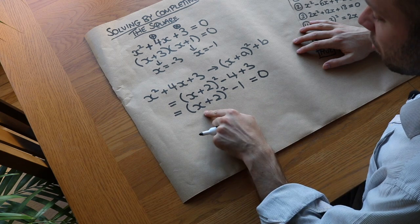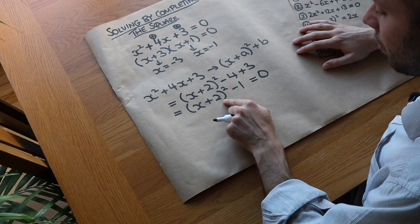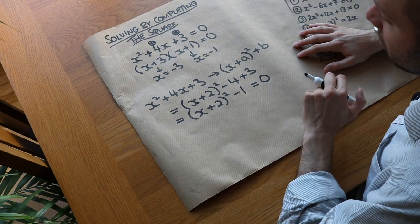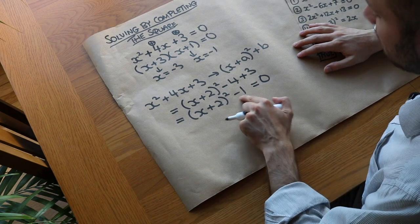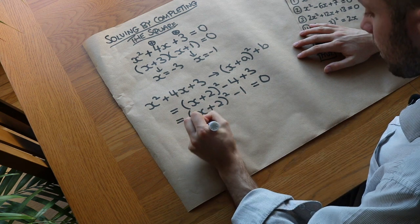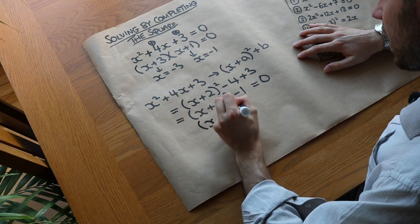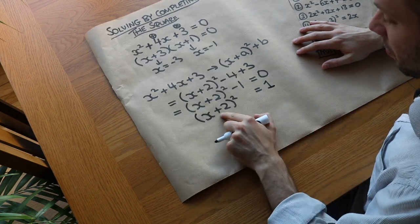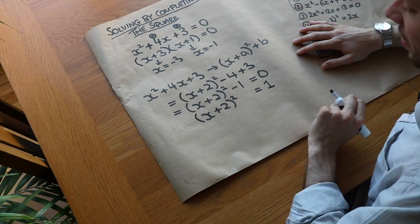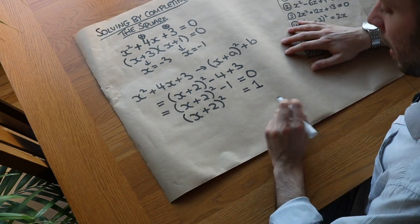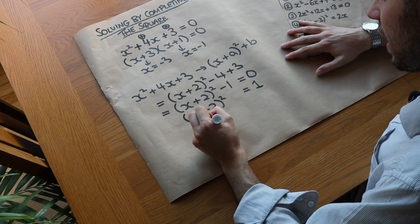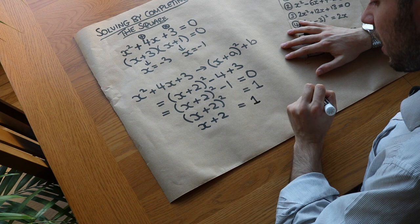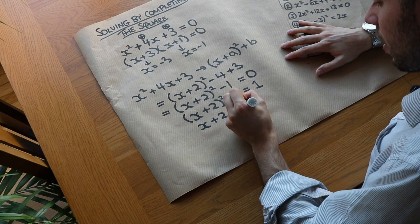Now we need to think about how to get x on its own. With x, you're adding 2, then squaring it, then subtracting 1 to get 0. So we undo those steps in reverse order. We subtracted 1 last, so we add 1 to both sides, giving x plus 2 squared equals 1. Now we undo the square by square rooting both sides. That gives us x plus 2 equals the square root of 1, which is 1.